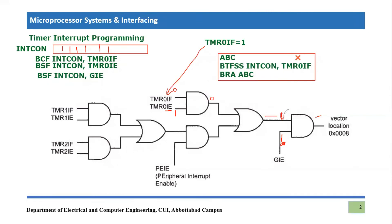Whenever the timer expires, Timer0IF becomes one. One AND one equals one, which flows through the AND gate. Since GIE is an OR gate input and it is one, the output becomes one and one into one gives one, notifying the microcontroller that a Timer0 interrupt has arrived. The microcontroller then switches to the interrupt vector table and checks which interrupt has interrupted it.